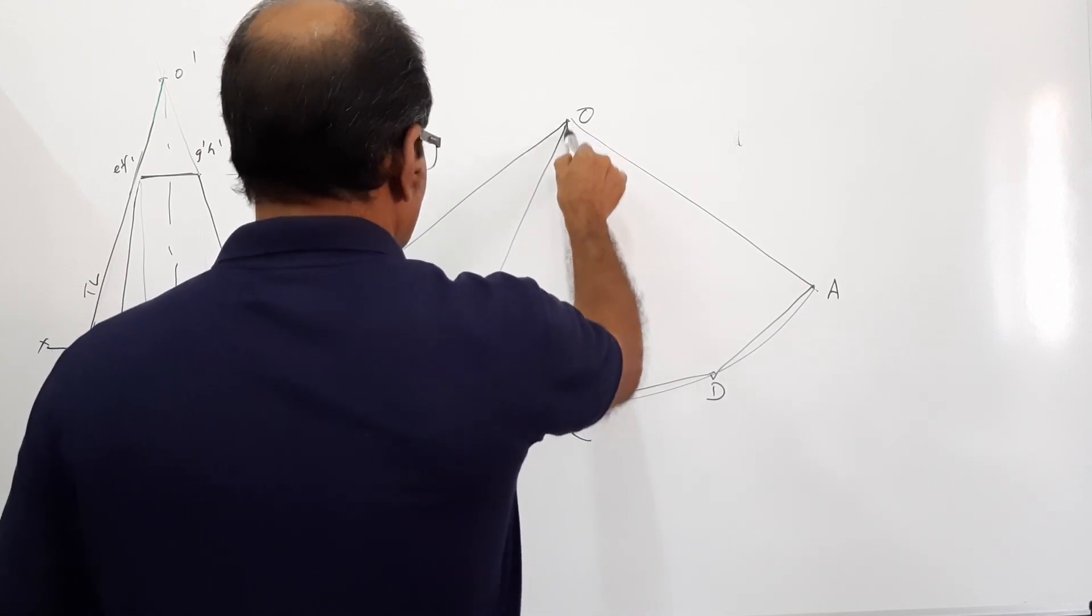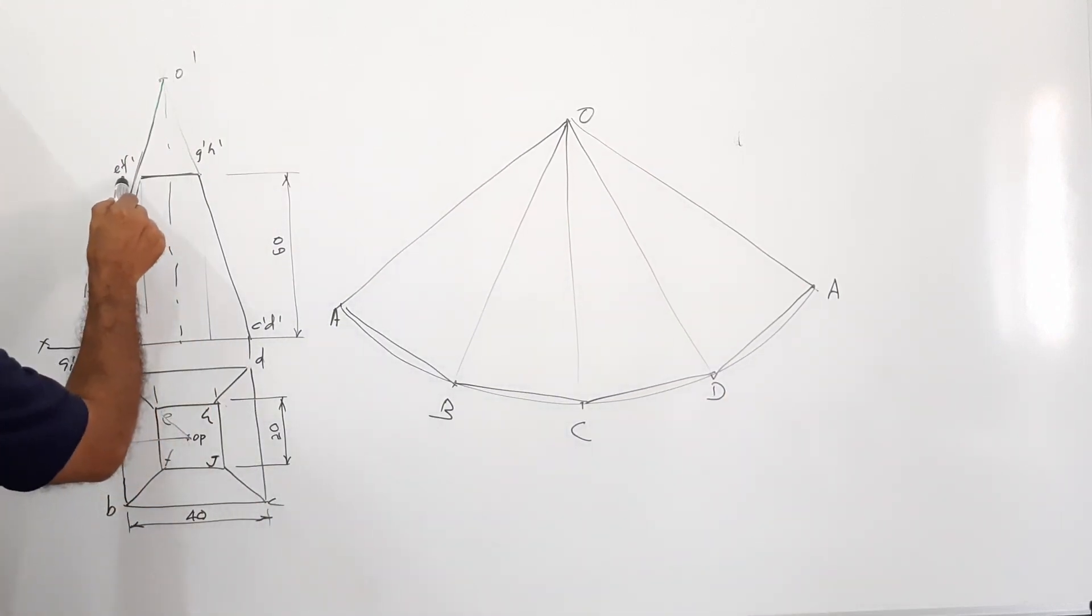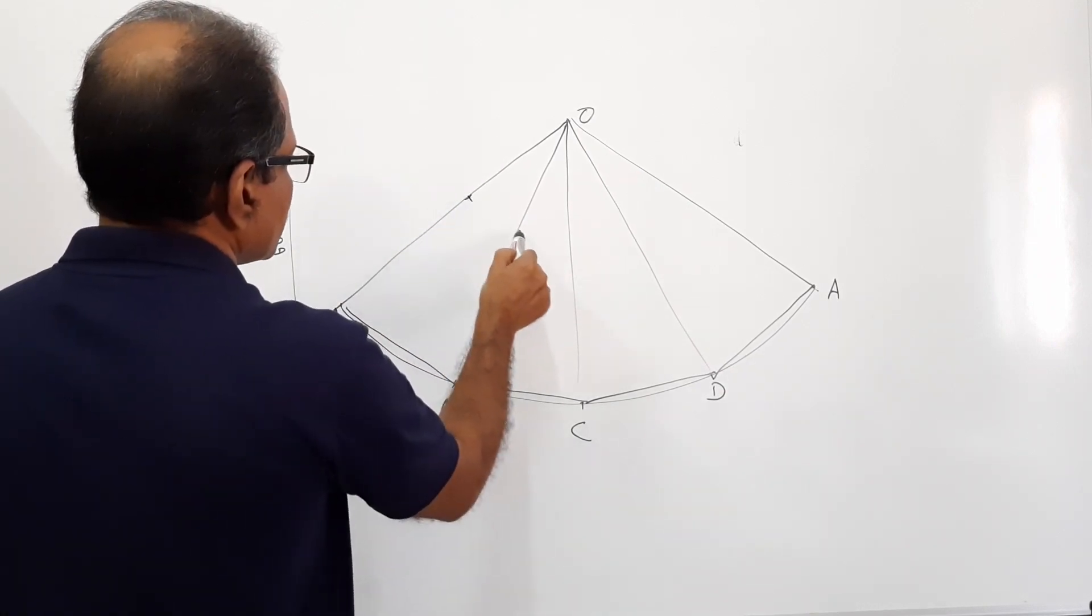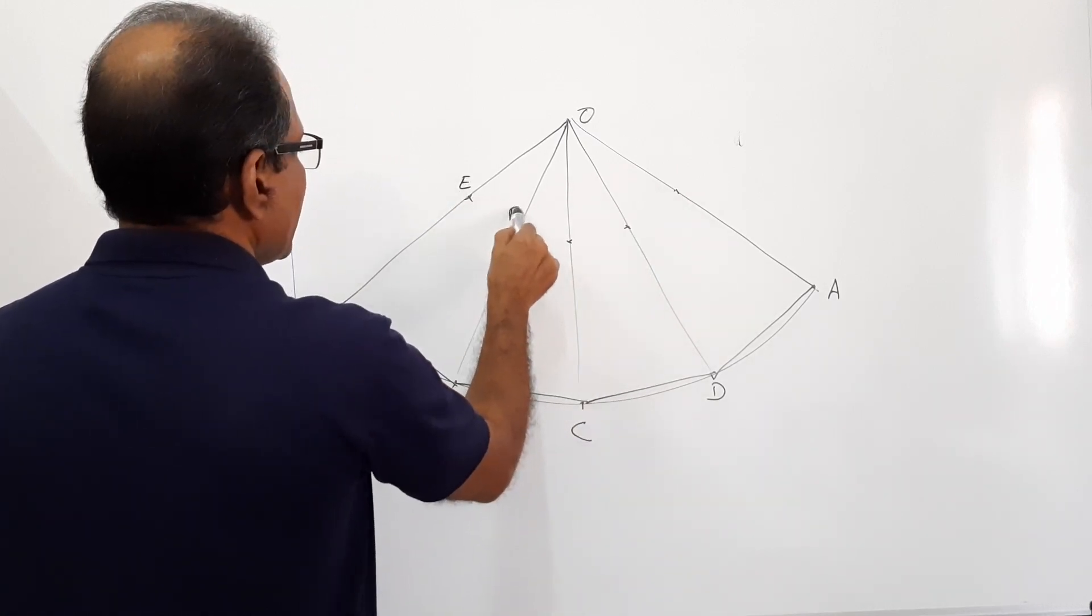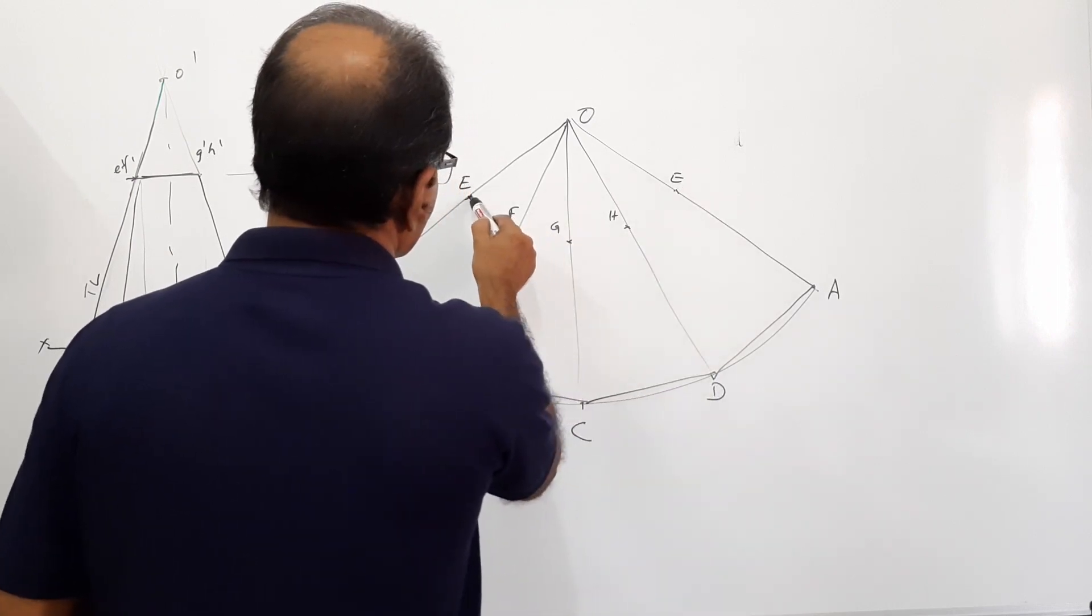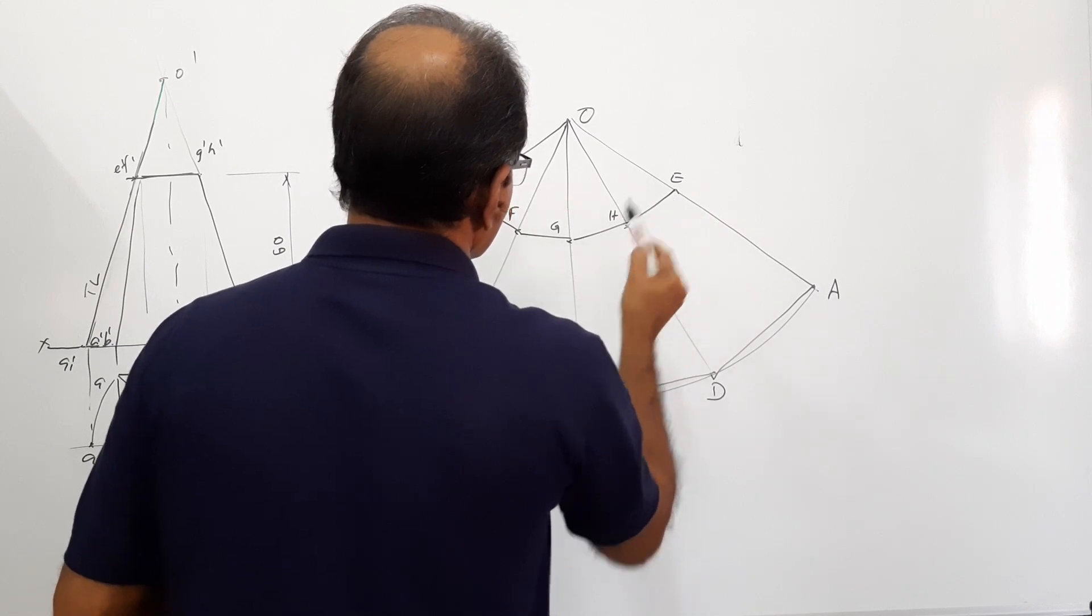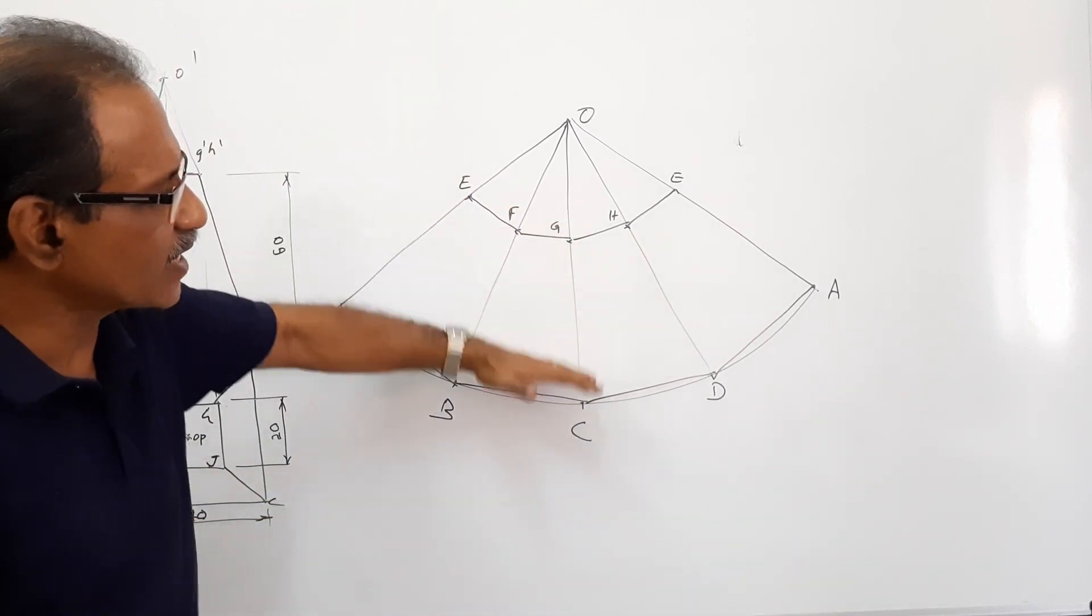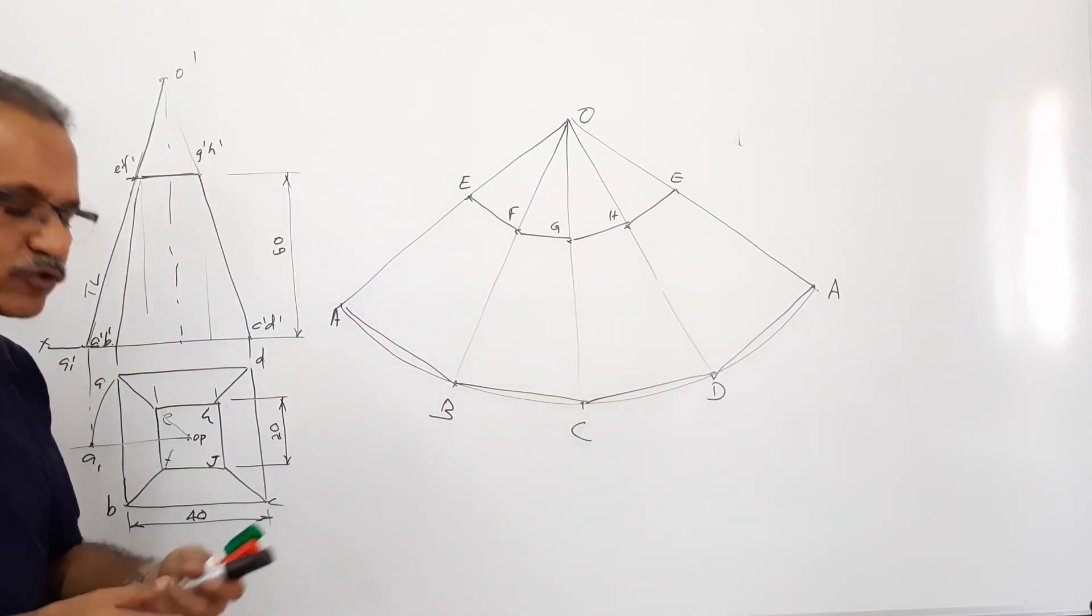Connect them to O. Extend this, cut it, take that distance and mark E, F, G, H. Connect them E to F, F to G, G to H, H to E. What is this? This part is the development of lateral surface of the frustum of square pyramid.